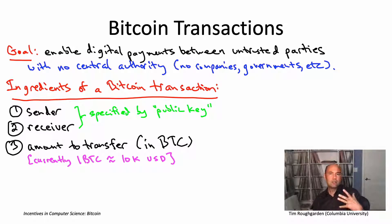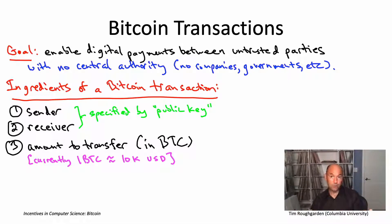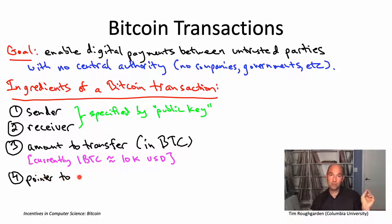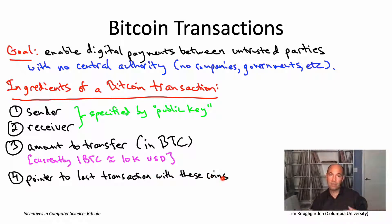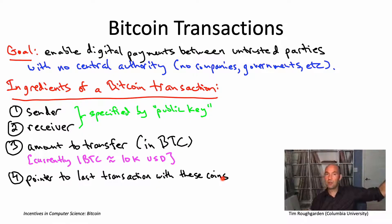So next, the sender has to justify that they really do possess the funds that they are aiming to transfer to the receiver — they need a proof of funds. And the way they prove they have the funds is they point to some previous transaction spending those exact same coins and giving it to the sender. So the sender says, I'm sending one Bitcoin, and that Bitcoin is the one I was paid in this transaction in the past.